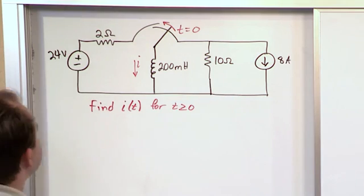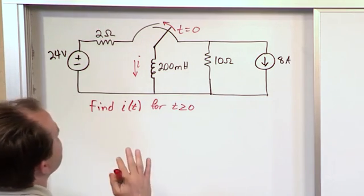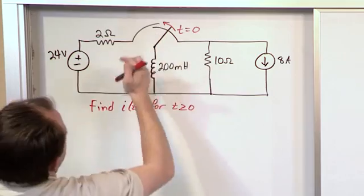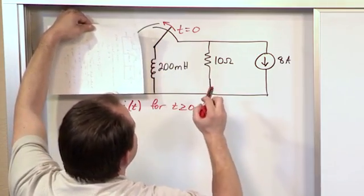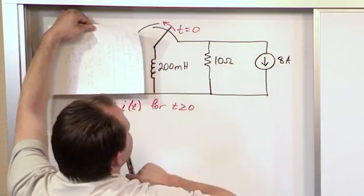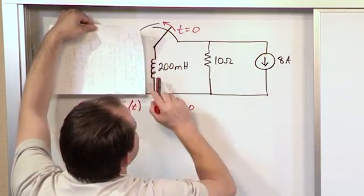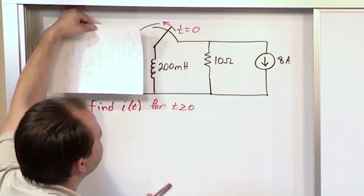Alright, so the first thing we want to look at is what does the circuit look like before the switch moves? So it's over here, so you can essentially cover all this stuff up. And what's going to happen here is if the circuit was left in this position for a very long time, then this inductor is going to look like a short circuit.